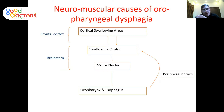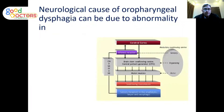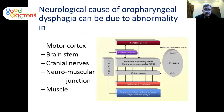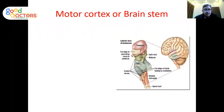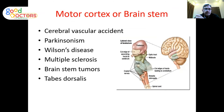By narrowing the differential diagnosis to neurological causes, the area of interest becomes the motor cortex, brainstem, cranial nerves, neuromuscular junction, and muscles. Conditions affecting the brain include CVA, Parkinsonism, Wilson's disease, multiple sclerosis, brain tumors, and tabes dorsalis. Imaging studies — either MRI or CT — can help diagnose these conditions.